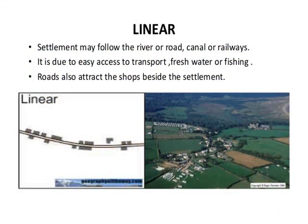Next is the linear settlement. Linear settlements are those that are formed in a line. Houses, shops, dhabas, petrol pumps, and garages develop along the sides of roads, railway lines, or river banks. Gradually these linear settlements grow in size and develop into trading centers.